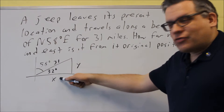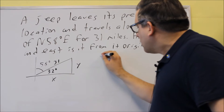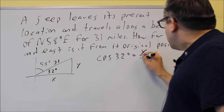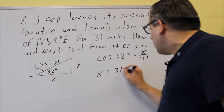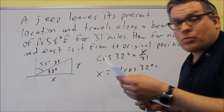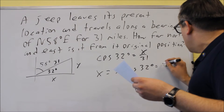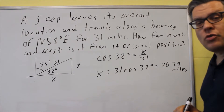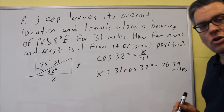Now we have everything needed to solve for x and y. To solve for x first: with 32 degrees as our angle, we have an adjacent side x and a hypotenuse of 31, so we use cosine. Cosine of 32 degrees equals x over 31. Cross-multiplying gives x equals 31 cosine 32 degrees. Putting that into the calculator gives approximately 26.29 miles — that's how far east it is from the original starting point.